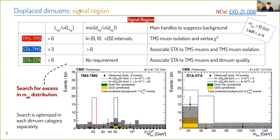We go to the signal region, searching for an excess in the dimuon mass distribution separately for each category. The TMS-TMS plot is done entirely in the tracker, and the STA-STA plot is done in the muon system — backgrounds are pretty low. The difference in number of bins reflects the mass resolution in each detector. The displacement requirements are very different for each category because the search is optimized in each dimuon category separately.